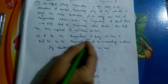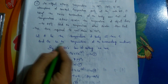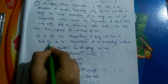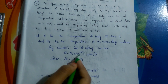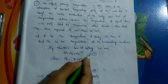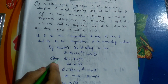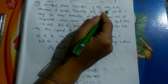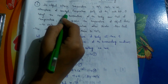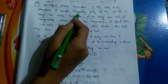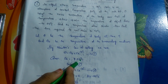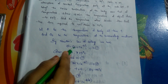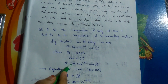Let θ be the temperature of the body at time T and θ₀ be the temperature of the surrounding medium. By Newton's Law of Cooling, we have θ = θ₀ + C·e^(−kT) — call this equation 1. Given that the atmosphere is at constant temperature 25°C, so θ₀ = 25°C. Substituting into equation 1 gives θ = 25 + C·e^(−kT) — call this equation 2.